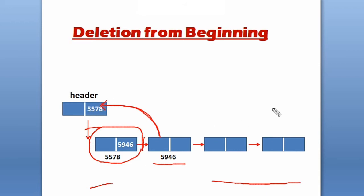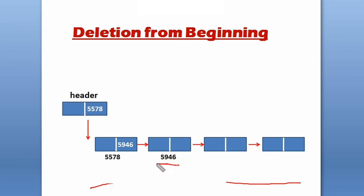We can't do this directly because this node's address is not directly available. Without the address, we can't perform this operation directly. So how can we perform this operation? We need a simpler approach.